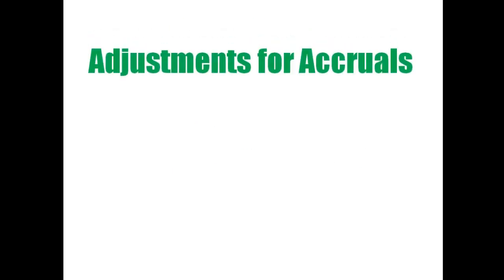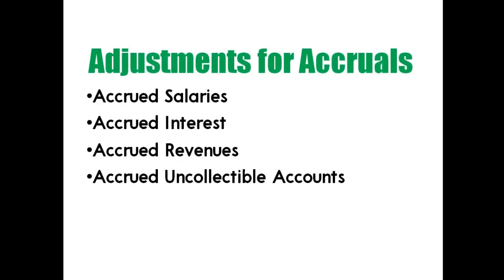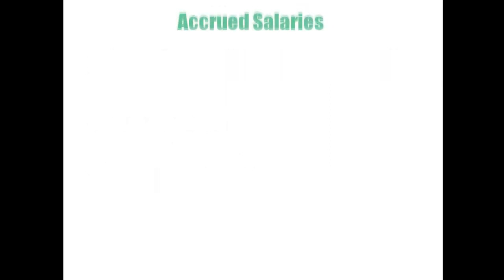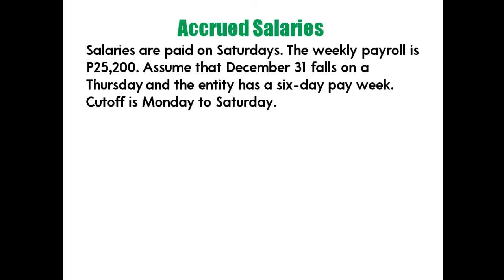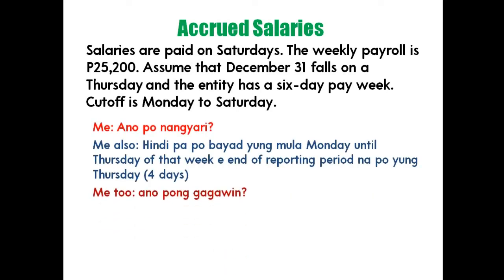Next are adjustments for accruals. These include: accrued salaries, accrued interest, accrued revenues, and accrued uncollectable accounts. For accrued salaries problem: salaries are paid on Saturdays. The weekly payroll is 25,200 for a six-day work week (Monday to Saturday). December 31 falls on a Thursday, so salaries from Monday to Thursday have not yet been paid.